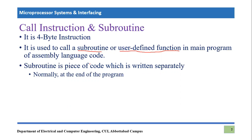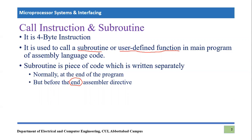We have seen so many examples in previous lectures. At the end of that unconditional branch or indefinite loop, there is some separate code written, but it is written before the END assembler directive. We cannot write anything after the END assembler directive because the compiler will not compile anything written after it. So a subroutine is written separately at the end of the code, but it is written before the END assembler directive, and it will also be part of the code which will be compiled by the compiler.